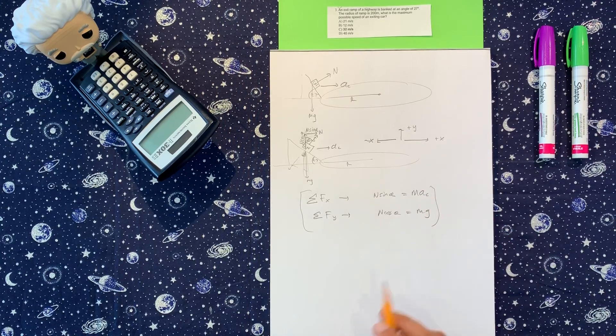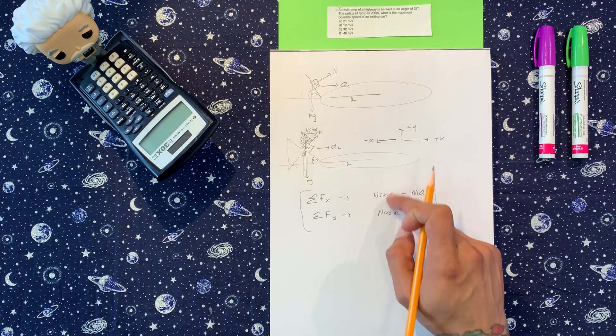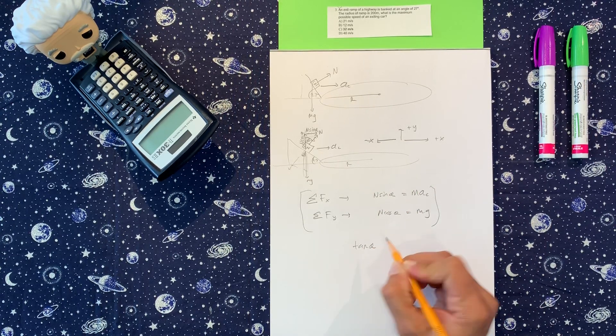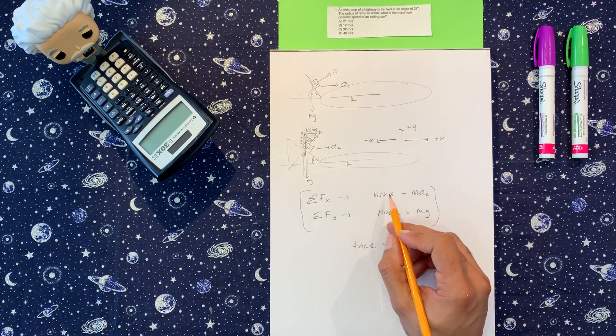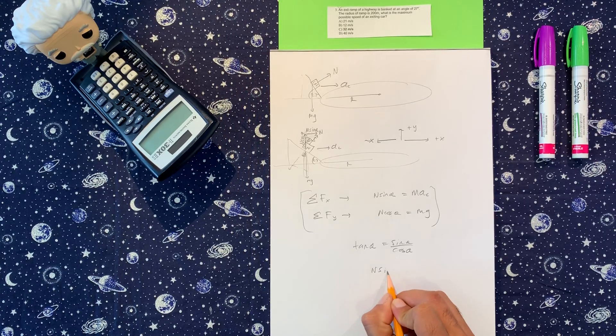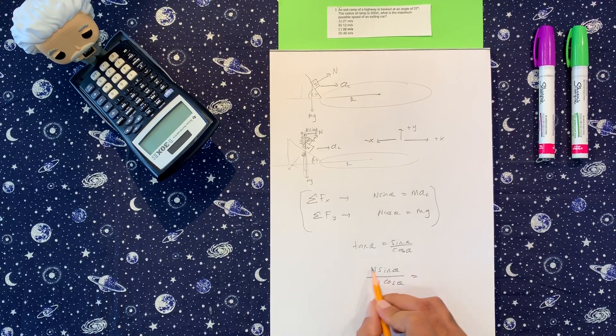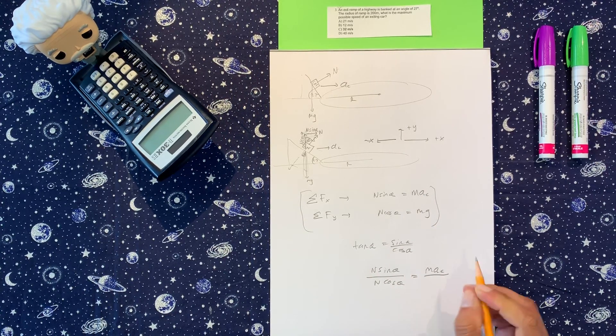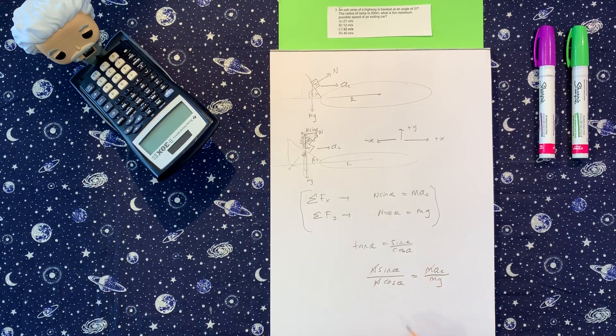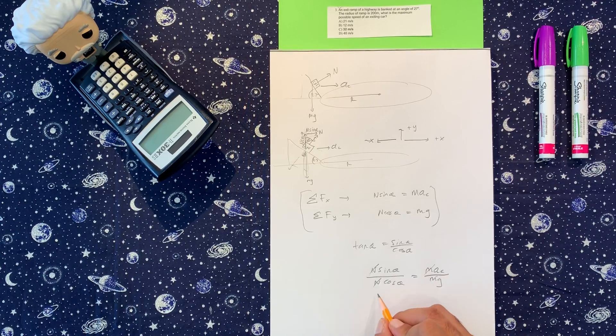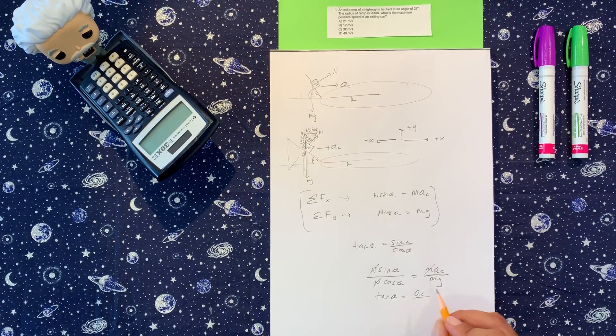Same things as before. But now, this part here, all we need to do is combine these two by using tangent. Tangent is sine over cosine. So we're going to put this over this, we're going to say n sine theta over n cosine theta. n sine theta is mac, and n cosine theta is MG. Cancel out the m's, cancel out the n, and I'm going to write tangent theta is equal to centripetal acceleration over gravity.